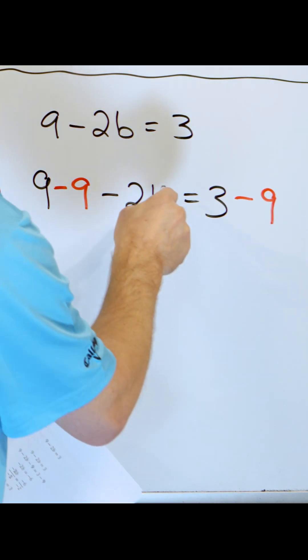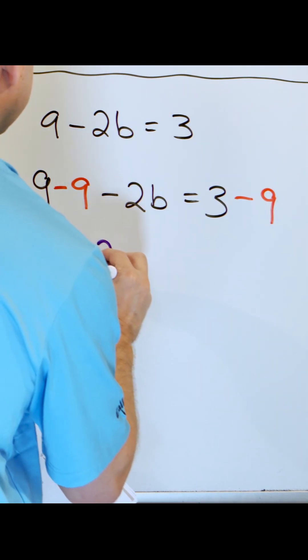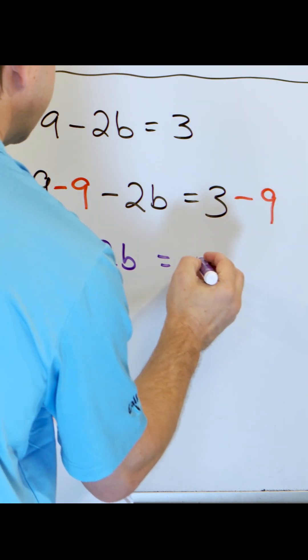All right, so nine minus nine is zero. What am I left with? Negative two b. Three minus nine is negative six.